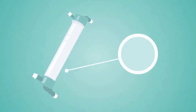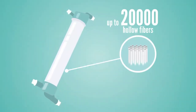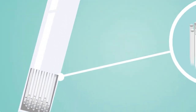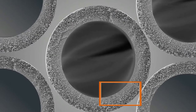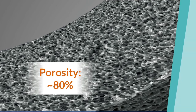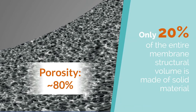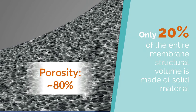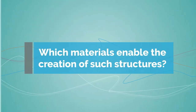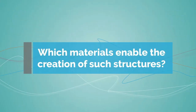Each dialysis filter usually contains between 10 to 20,000 tubular hollow fibers, which are made up of the membrane with about 80% porosity. This means 20% of the entire membrane's structural volume is made of solid material. Which materials enabled the creation of such structures?